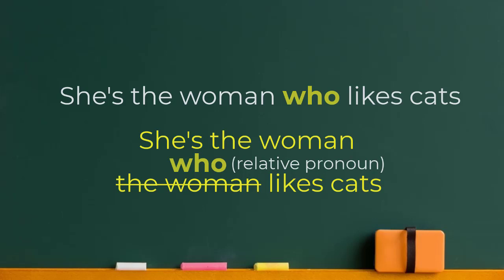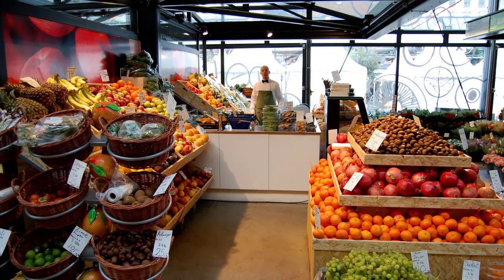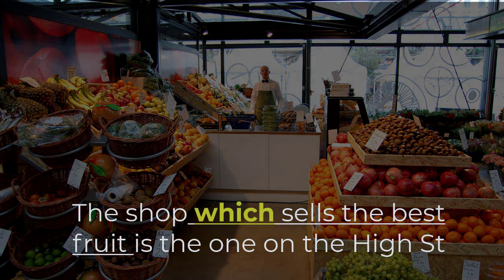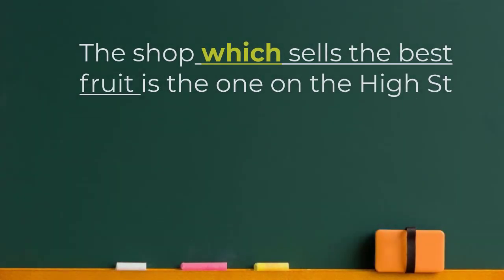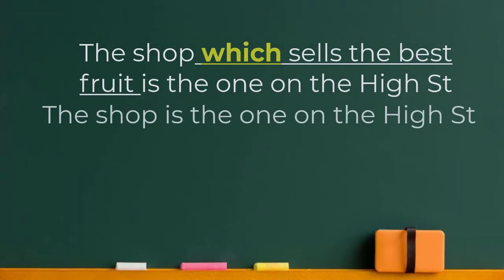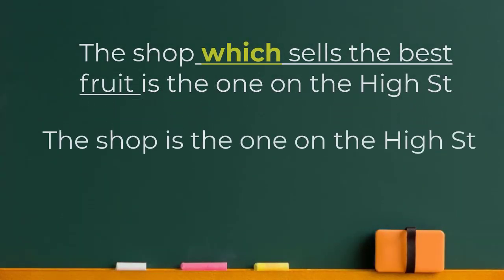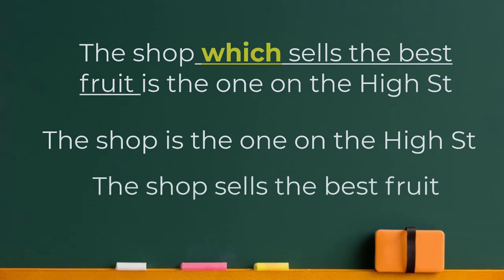If we're talking about a thing, we use 'which': 'The shop which sells the best fruit is the one on the high street.' — combining 'The shop is on the high street' and 'The shop sells the best fruit.'